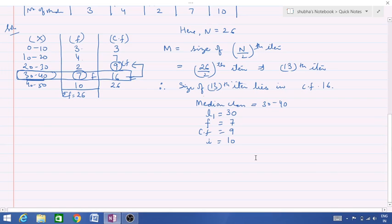Now by putting the values in the next formula, median is equal to L1 plus n upon 2 minus CF upon F into i. So L1 we know that it is 30, plus n by 2 we have calculated is 13, minus CF, CF is 9, frequency is 7, into i is 10. So you can see that 30 plus 4 upon 7 into 10, so we can write this 40 upon 7.